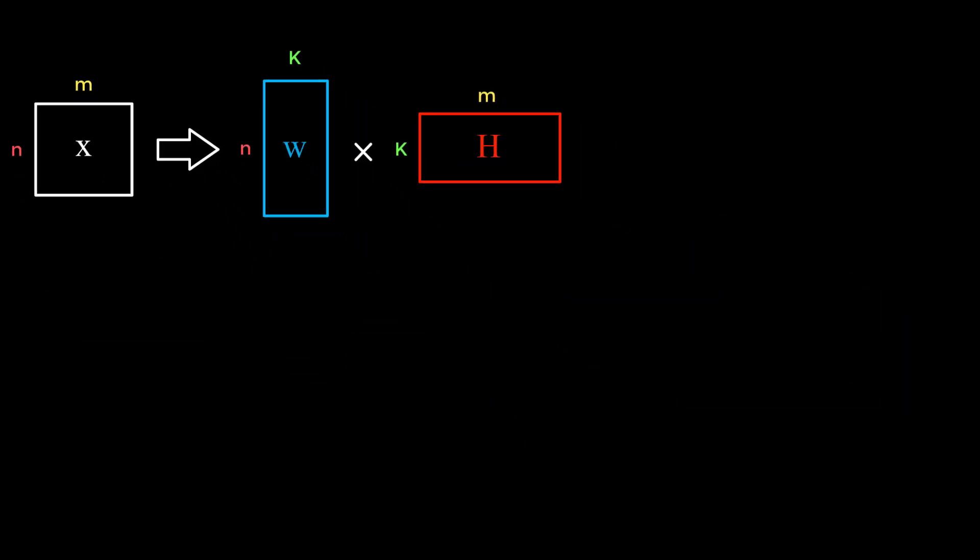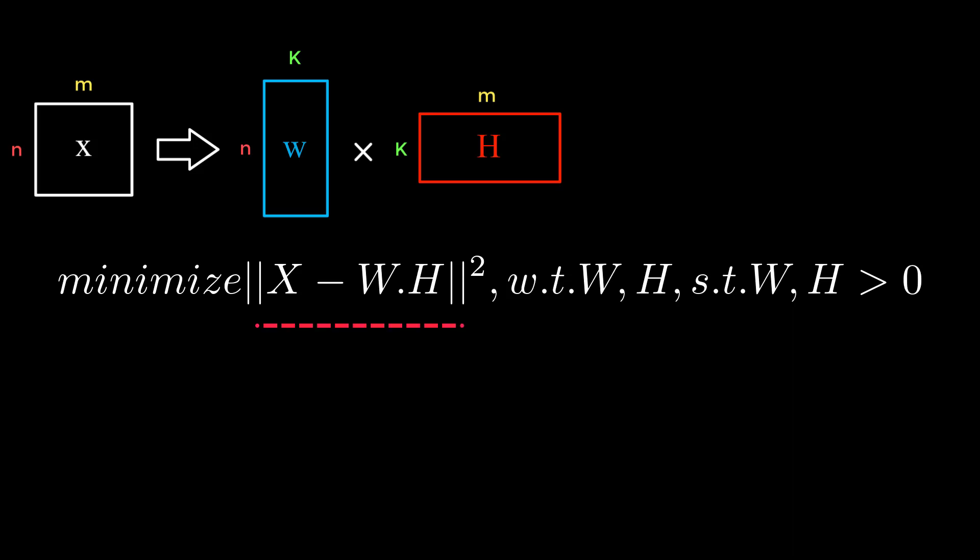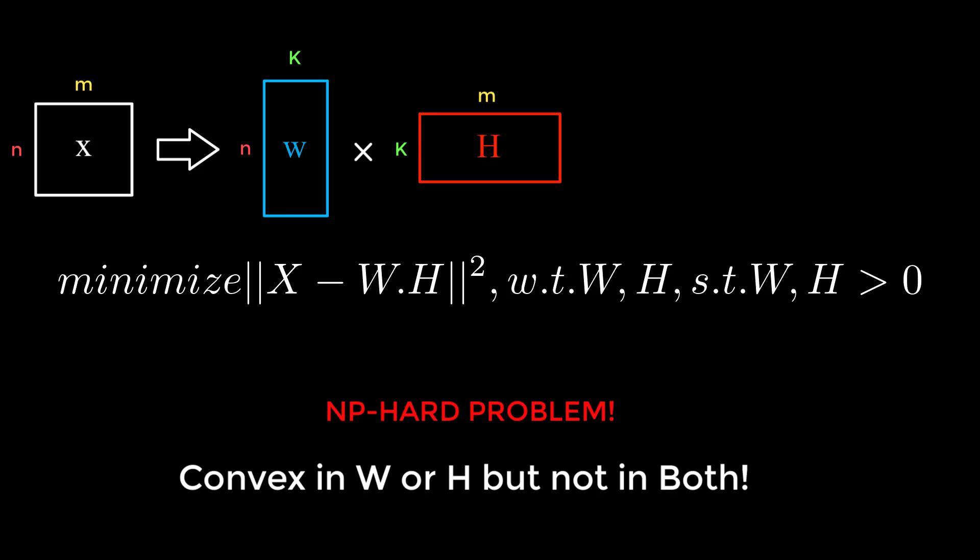So in order to do it, we need to solve a minimization problem. We need to minimize the distance between X and W times H with respect to W and H, and we have to keep in mind that W and H don't have any negative entries.